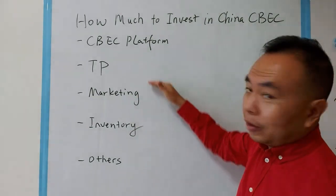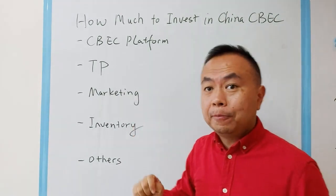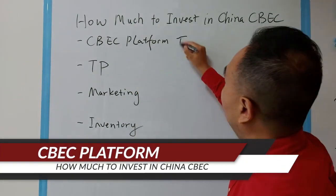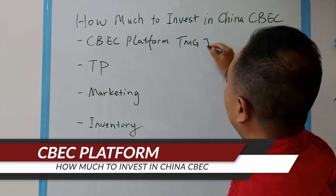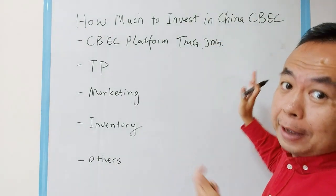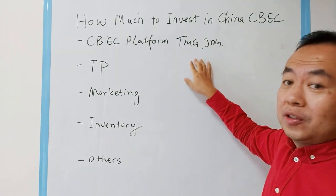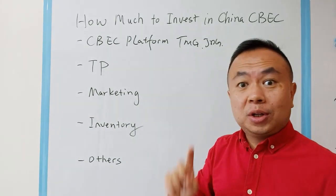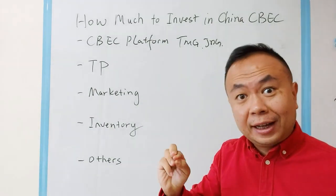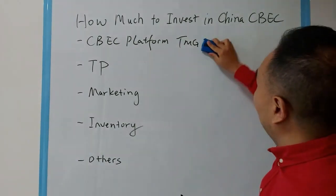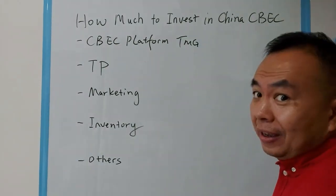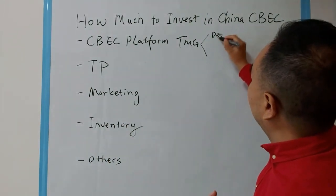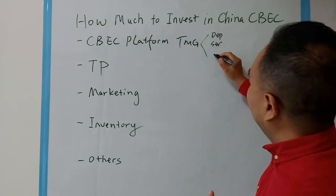I listed some of the elements here. Let's talk about them one by one. The first one is cross-border e-commerce platforms such as Tmoglobal, JDglobal, etc. There are many of them, and their cost structures are almost the same as Tmoglobal, which is the first and biggest cross-border e-commerce platform in China. I worked there as VP and I defined this cost structure. In short, it includes deposits, service fees, and commission.